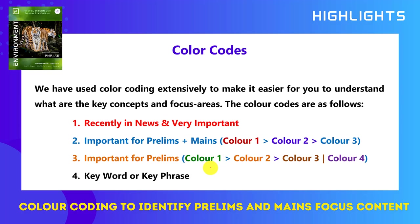Another important feature of the book is the color coding scheme. Beginners often find it hard to understand what is an important topic and what is not. To make it easier, we have introduced a color coding scheme where different colors are given based on the importance of the topic. You can go through this color code to understand how important a concept is for the exam. I'll now quickly walk you through the contents of the book so you can understand how the presentation and design is done.